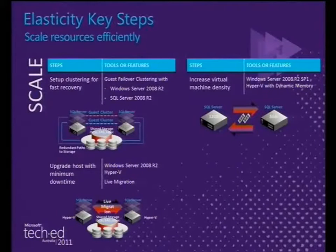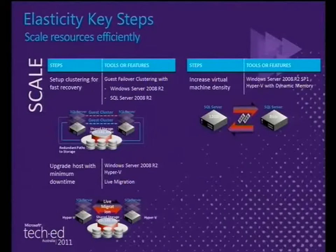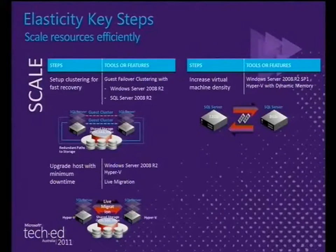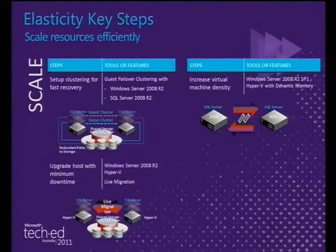Dynamic memory is definitely key — Hyper-V R2 SP1 — making sure we can increase virtual machine density. The larger cost factors from an infrastructure perspective are the servers and the cost of feeding and watering them with power. We want to provide the highest density you're comfortable with. Technologies like live migration, high availability, and dynamic memory offer consolidation ratios that put us well on par with other virtualization technologies.